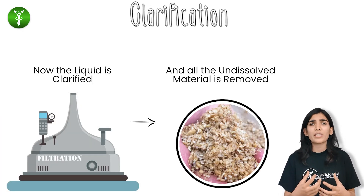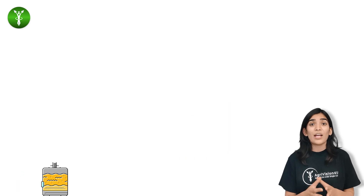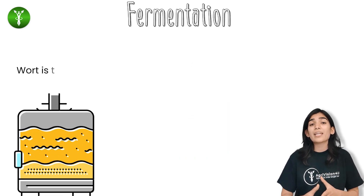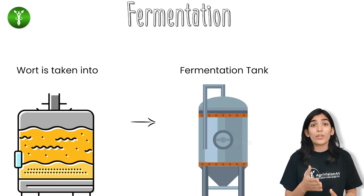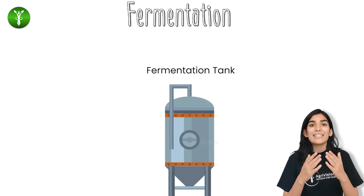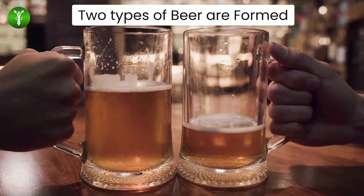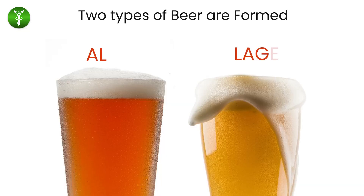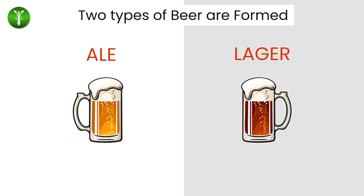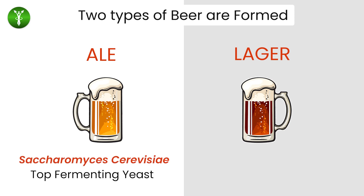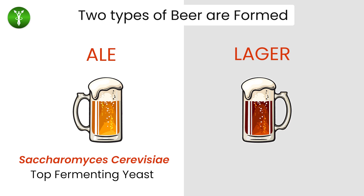Hops are basically flowers of a plant called Humulus lupulus, which consist of essential oils that add a distinct bitterness to beer. The liquid is then clarified and all undissolved materials are removed from it. The wort is then taken into the fermentation tank where the fermentation process takes place, using Saccharomyces yeast.